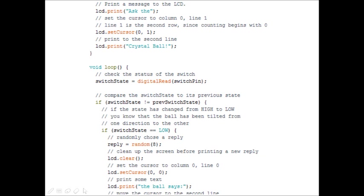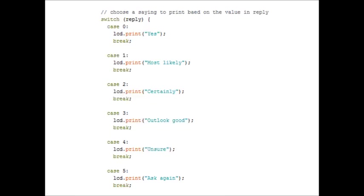Then you need to clear the screen with the function lcd.clear. This also moves the cursor back to the location at 0, 0, the first column in the first row of the LCD. And you need to print out the line the ball says and move the cursor for the output. So we've cleared the screen, we've set the cursor to the beginning, we've printed the ball says and then we've set it to the second line ready for the next piece of code.